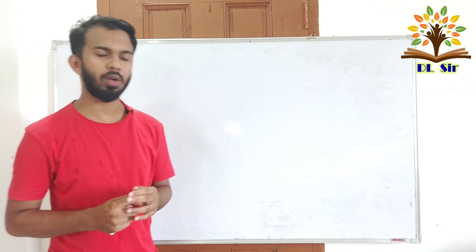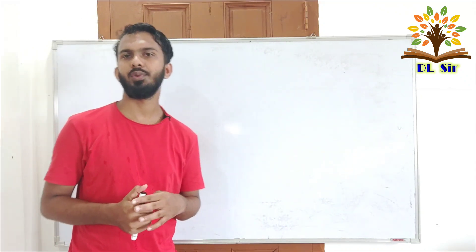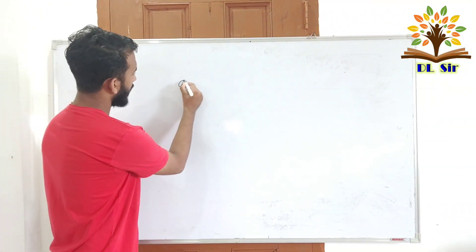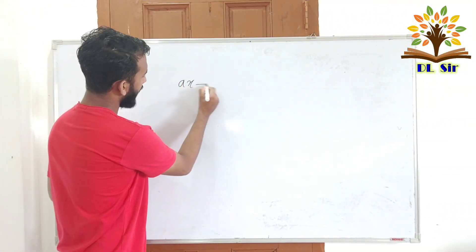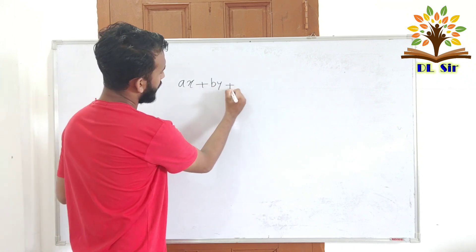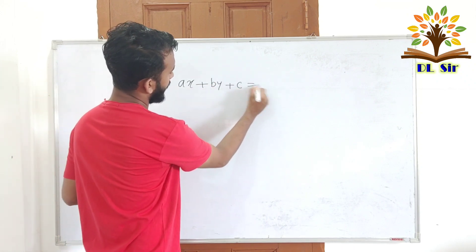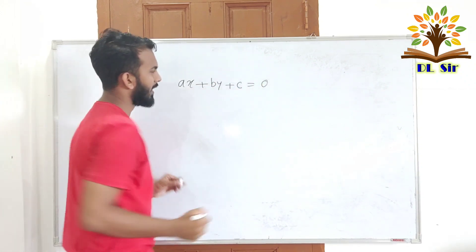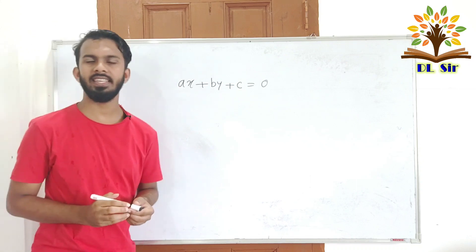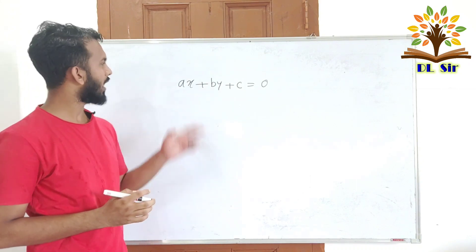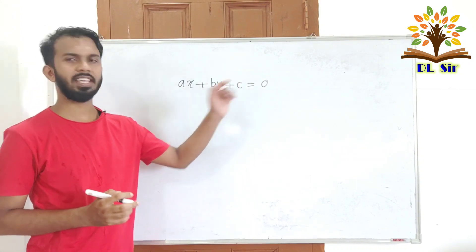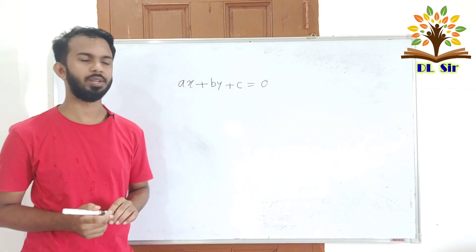Let's start with a basic simple example. We have ax plus by plus c equal to 0.